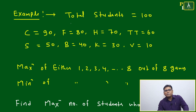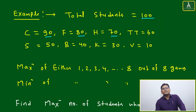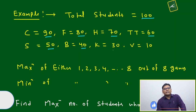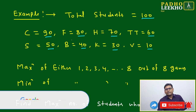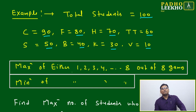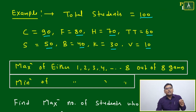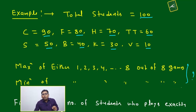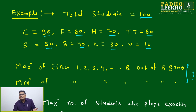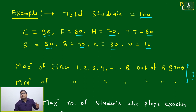Consider an example: a school has 100 students total. Cricket players: 90, Football: 80, Hockey: 70, Table Tennis: 60, Soccer: 50, Volleyball: 40, another game: 30, and one more: 10. There are eight games in total. A question might ask: what is the maximum number of students playing exactly three out of eight games, or exactly five out of eight?